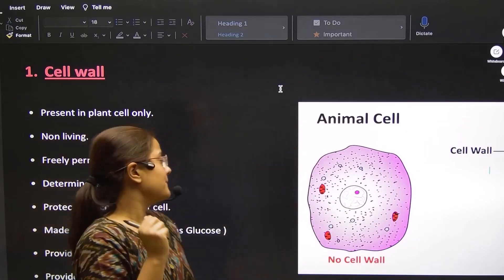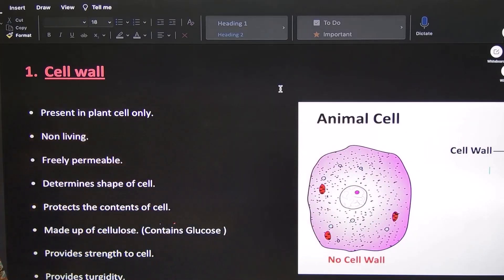Who does it ensure? Cell wall ensures. Who does it make? Cell wall is made of cellulose. Cellulose contains glucose. What does it provide? It provides strength to the cell.